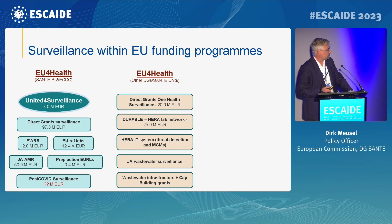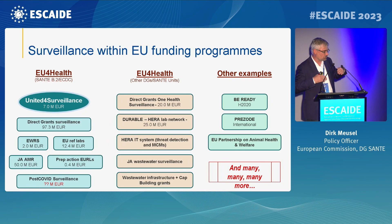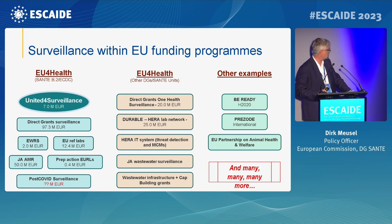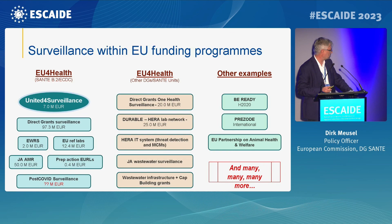For implementation at the union level, we have funding via the EU4Health program — with significantly increased funding compared to previous programs. We have the United for Surveillance Joint Action, a consortium of member state competent authorities. We have direct grants currently being negotiated with member states, funding for extension of the Early Warning and Response System, EU reference laboratories, a Joint Action on AMR with surveillance activities, and analysis of lessons learned from the COVID-19 pandemic response.